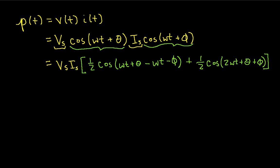When we do this, we find that in the first expression, the omega T's cancel. So we're left with something that looks like this. One half V sub S I sub S cosine theta minus phi, plus we'll draw this next one in a different color, one half cosine 2 omega T plus theta plus phi. And I left out a V sub S I sub S here.